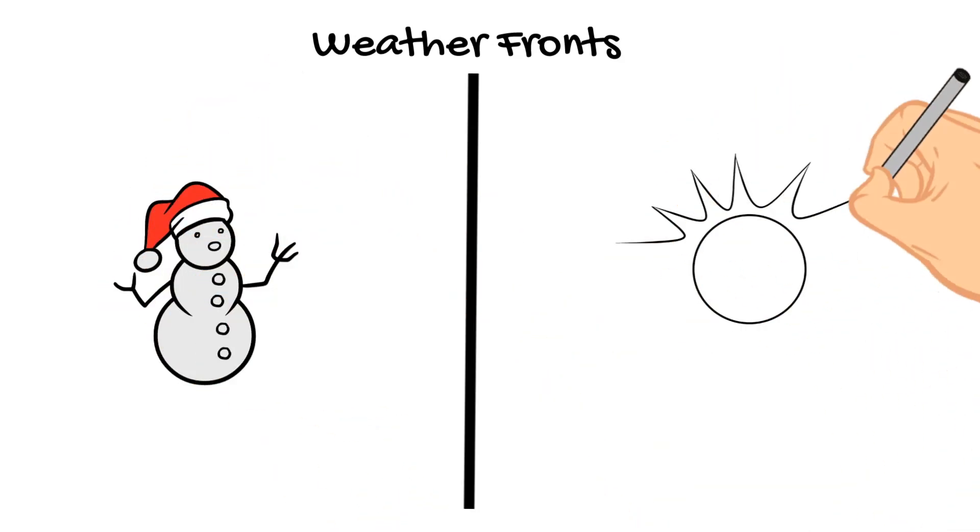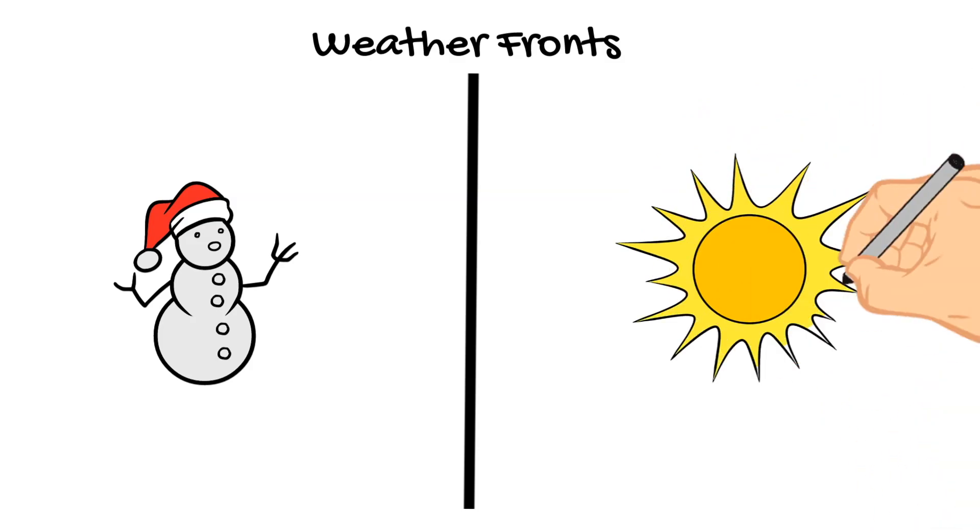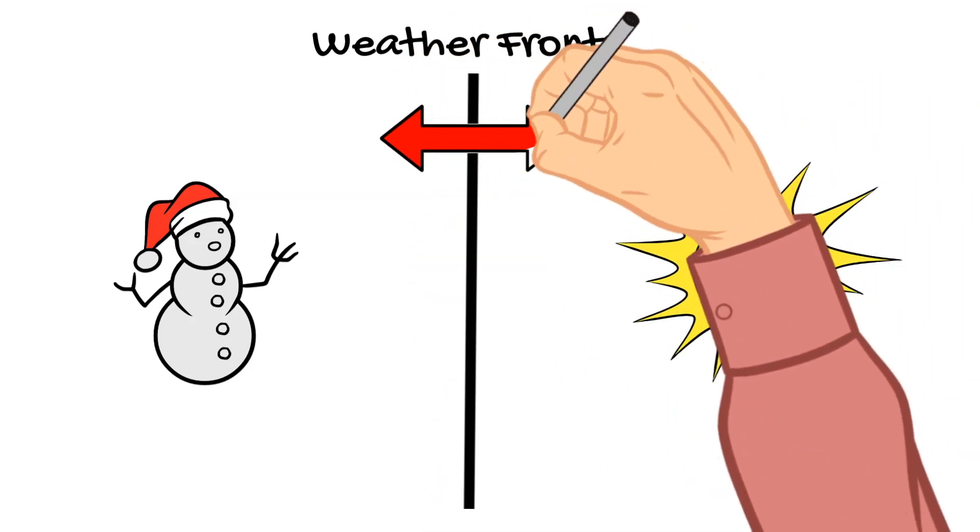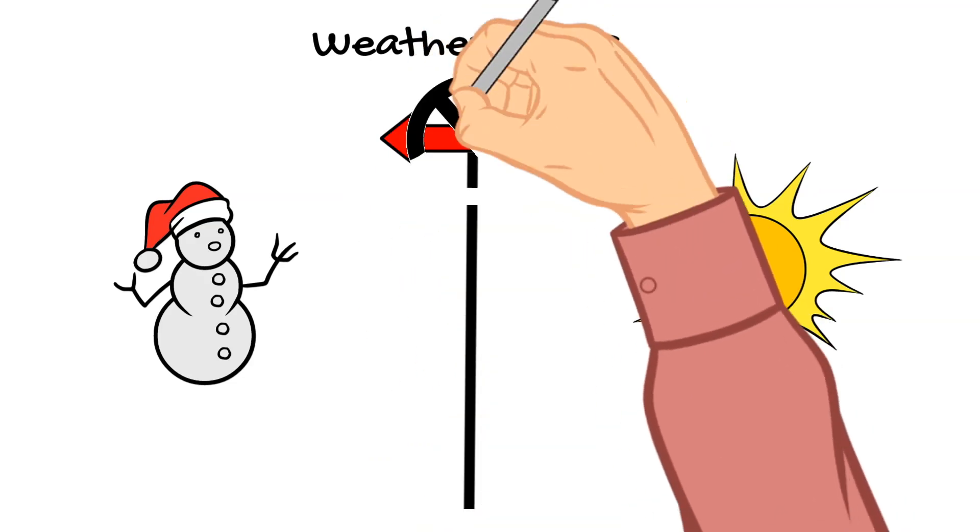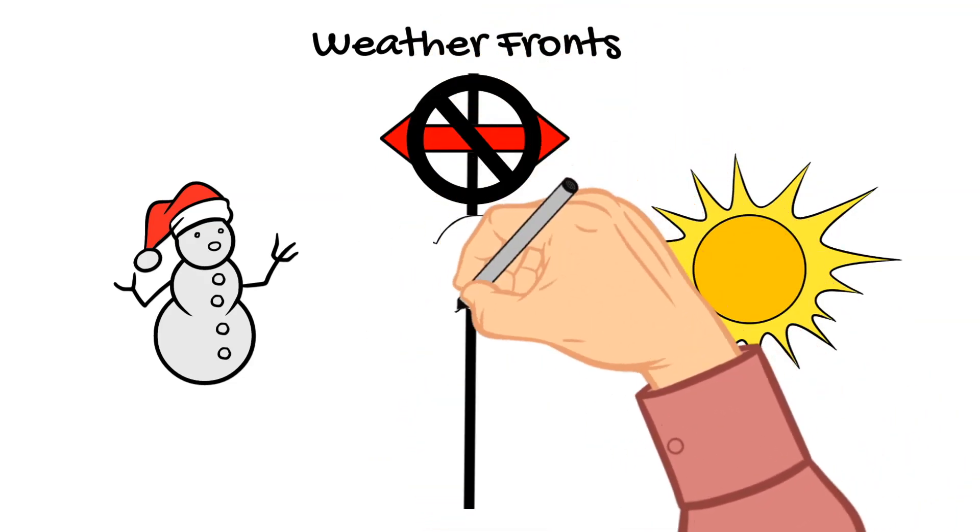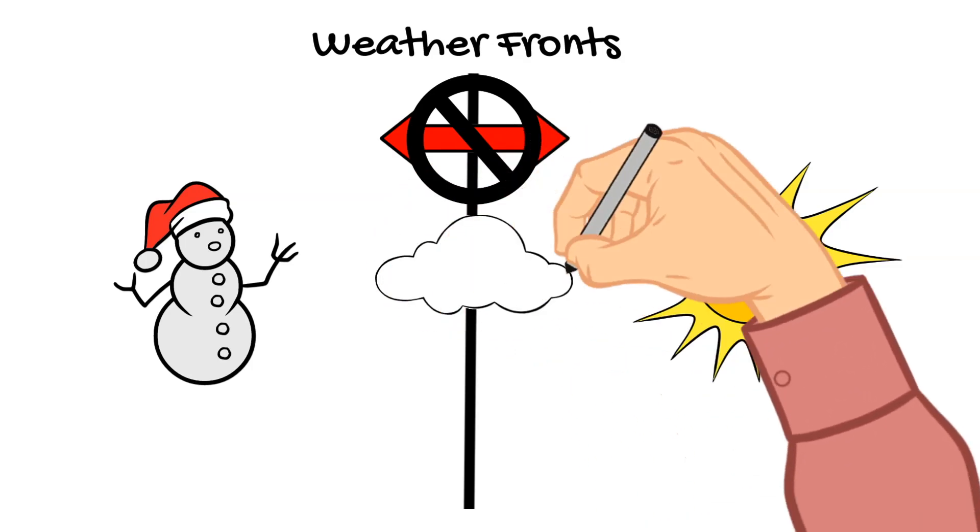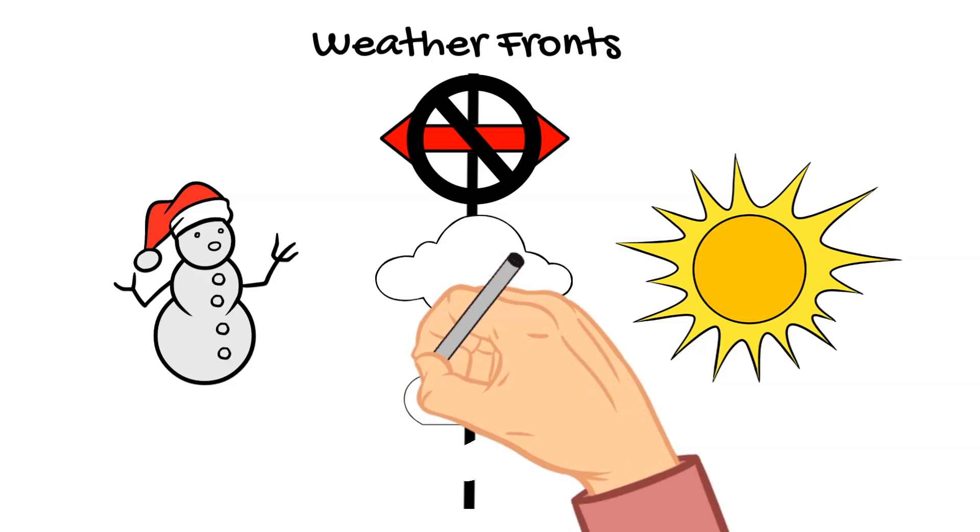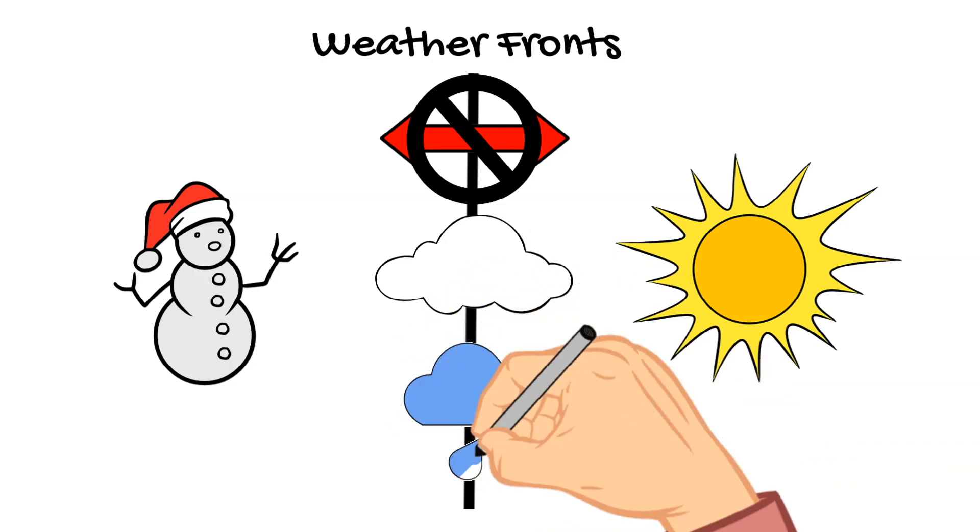Weather fronts are the boundary between two air masses of different temperatures. And these air masses don't typically mix, but the differences in temperature and pressure can cause clouds and precipitation in the form of rain, fog, thunderstorms, or even snow.